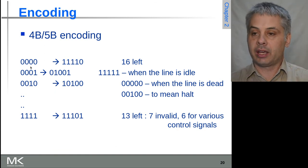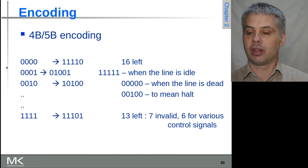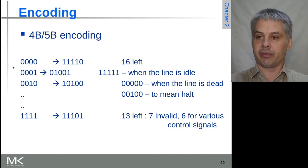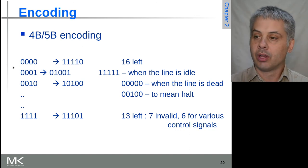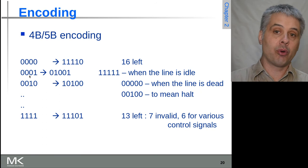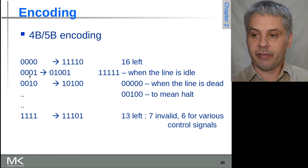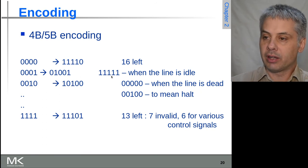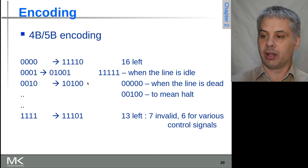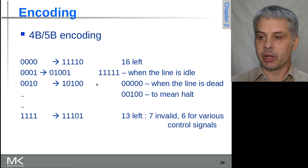So we can pick out bit combinations that actually meet this kind of thing. So we only use 16 of them to encode the data, and we can use a few more of them that are also fitting in these rules to indicate, for example, when a line is idle, or when we can actually then discriminate that from when it's been disconnected.